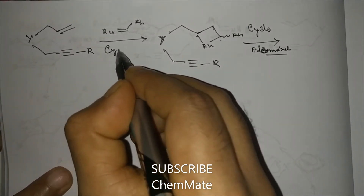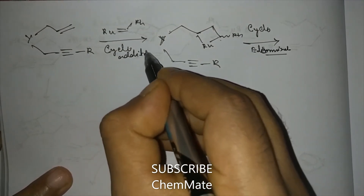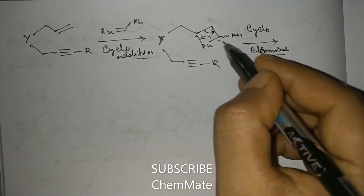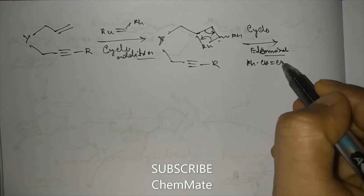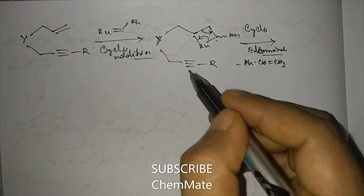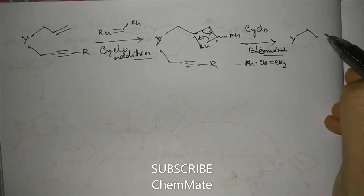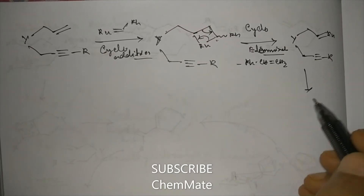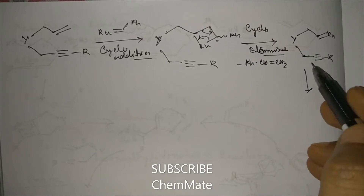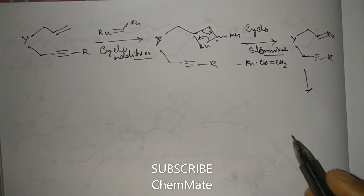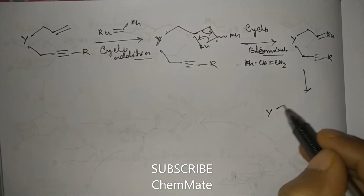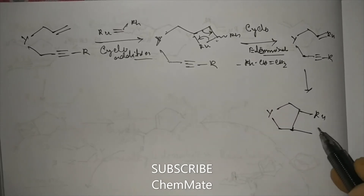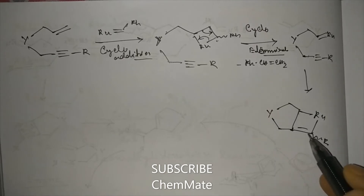Here, if cycloelimination takes place, then one styrene molecule will be removed, where Ph-CH=CH2 will be removed, and the product will be formed. Now, it will undergo an intramolecular cycloaddition with this ion. A five-member ring will be formed, with a double bond here.